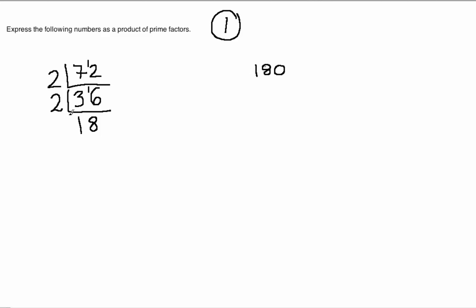Once again you can divide by the number 2 here. 2 into the number 18 is the number 9. Now here we can no longer divide by 2, so we think of the next number that goes into 9, which is the number 3.